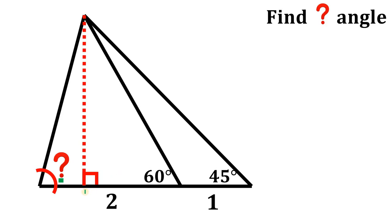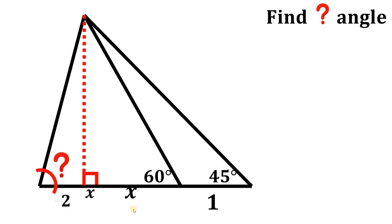First, let's call this segment d equal to x units. So since the total length of this segment is 2 units, this segment right over here is simply equal to 2 minus x. Now from here, let's consider this right triangle.